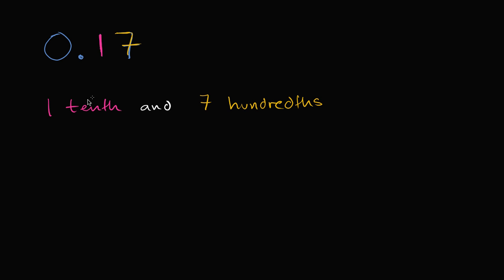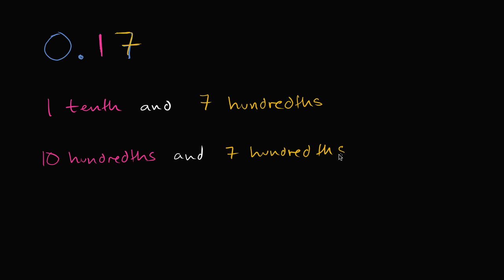Now another way to think about it is to say the whole thing in terms of hundredths. A tenth is how many hundredths? Well, a tenth is the same thing as ten hundredths. So instead of saying one tenth, you could say ten hundredths and seven hundredths. Now I can just add these hundredths — ten hundredths and seven hundredths is going to be seventeen hundredths.